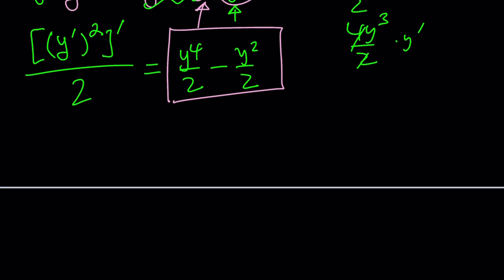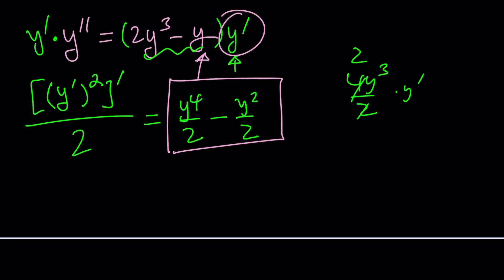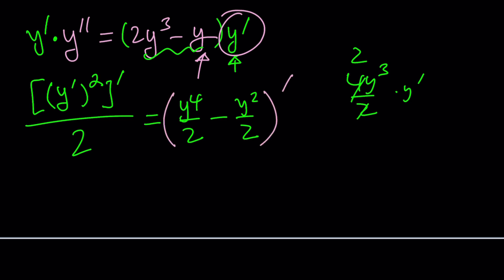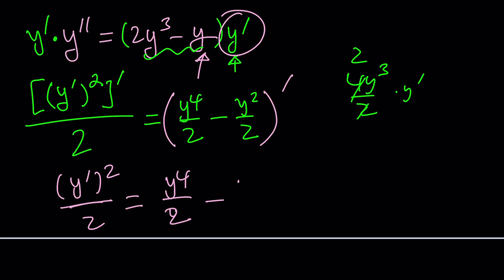Now we have derivatives on both sides, so we can integrate. That gives us y prime squared over 2, and the right side becomes y to the fourth over 2 minus y squared over 2. There's going to be a constant C. Let's multiply everything by 2: y prime squared equals y to the fourth minus y squared plus 2C₁, where C₁ is a constant.